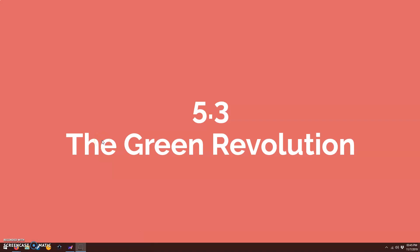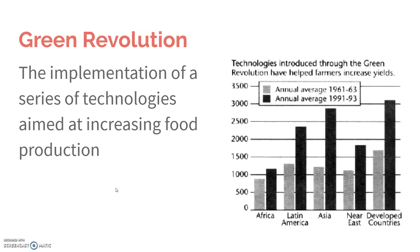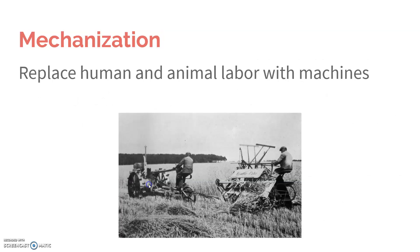In 5.3, we're going to transition to talking about how agriculture uses land and water, focusing on the Green Revolution to begin with. The Green Revolution was a point when basically how we did farming changed. It was aimed at increasing food production — not only how quickly it can be produced, but also how much can be produced, how large the crop was. It was the implementation of a lot of different technologies that increased how much food they could make.